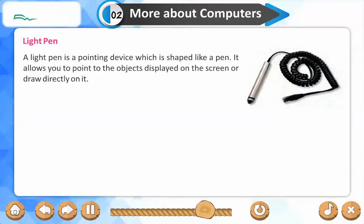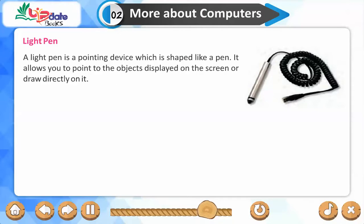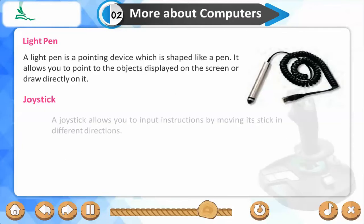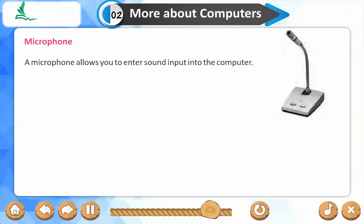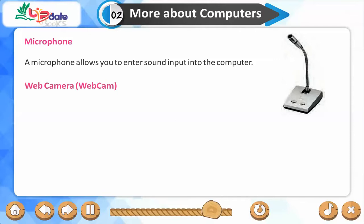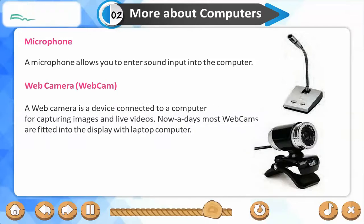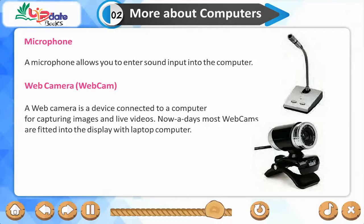A light pen is a pointing device shaped like a pen that allows you to point to objects on screen or draw directly on it. A joystick allows you to input instructions by moving its stick in different directions. A microphone allows you to enter sound input into the computer. A web camera is a device connected to a computer for capturing images and live videos; nowadays most webcams are fitted into the display of laptop computers.